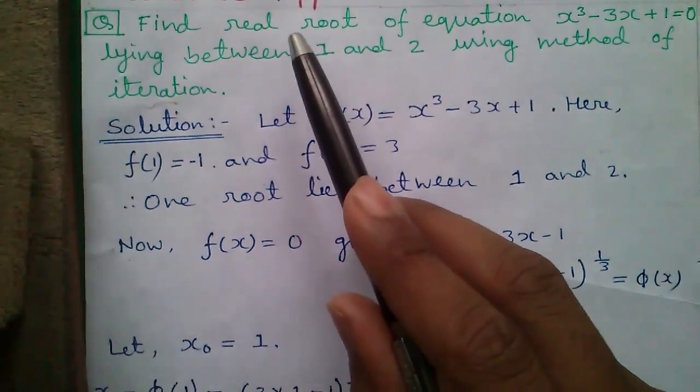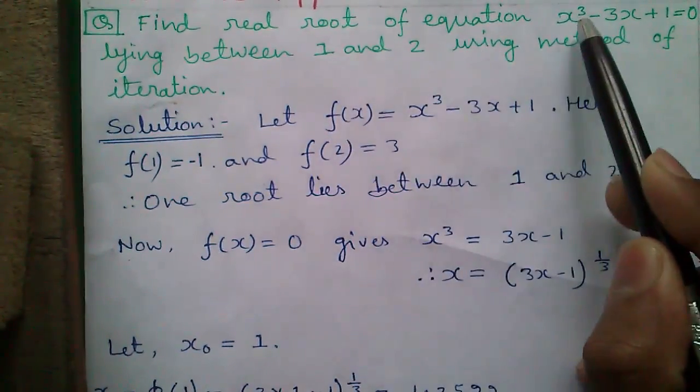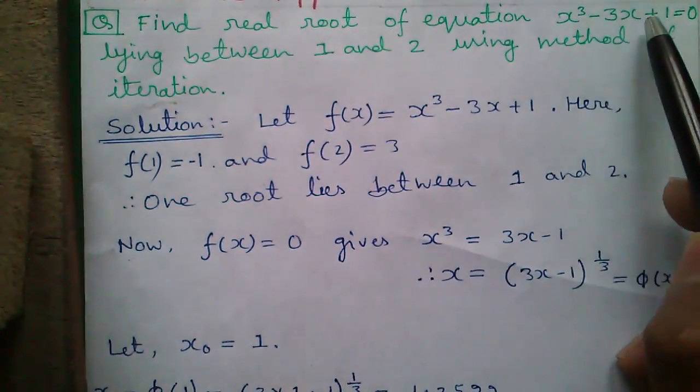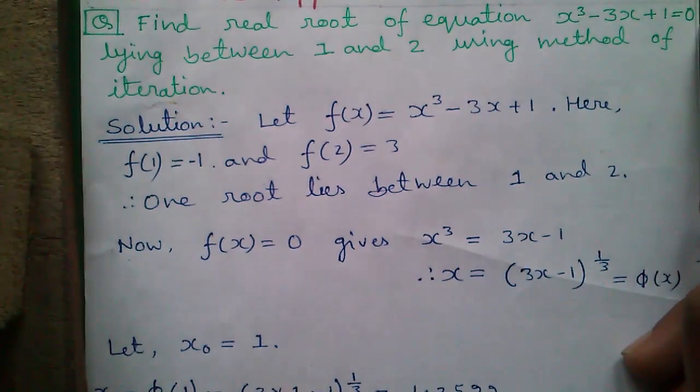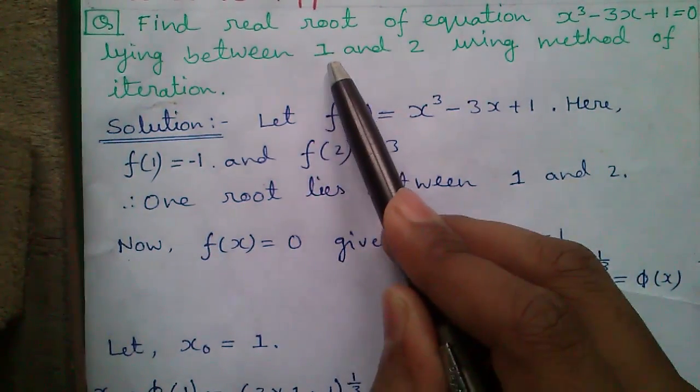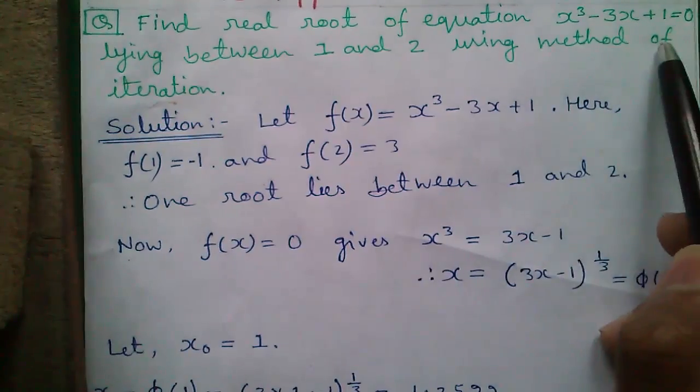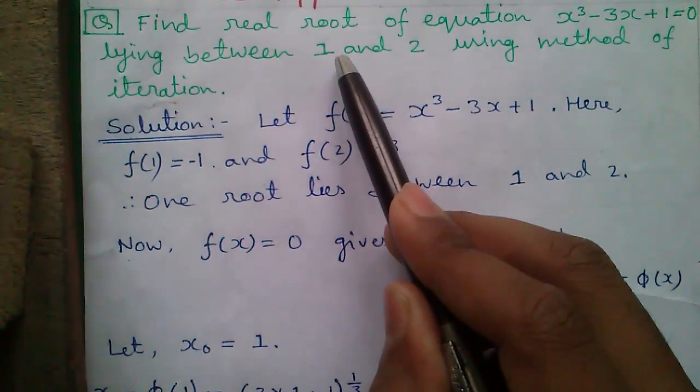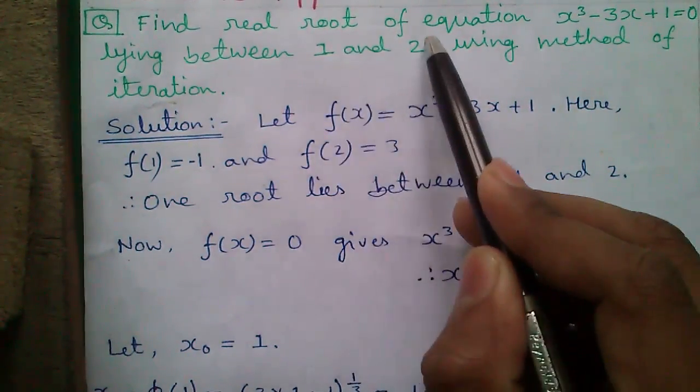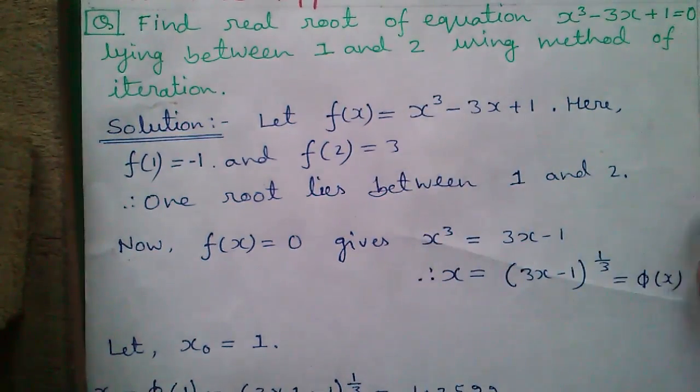Here is our question: Find the real root of the equation x³ - 3x + 1 = 0, the root lying between 1 and 2, using the method of iteration. This is called the range of the root, with the lower value 1 and upper value 2. In some questions, the range may not be given and you may have to find it out.